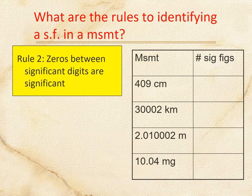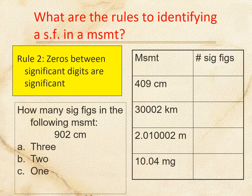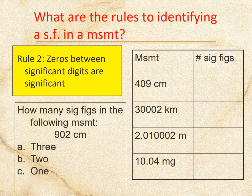Zeros in between significant figures are significant. So 409 is three sig figs, 3002 is five — wait, actually four — 2.01002 is seven, and 10.04 is four. For 902, if you said three, that is correct.